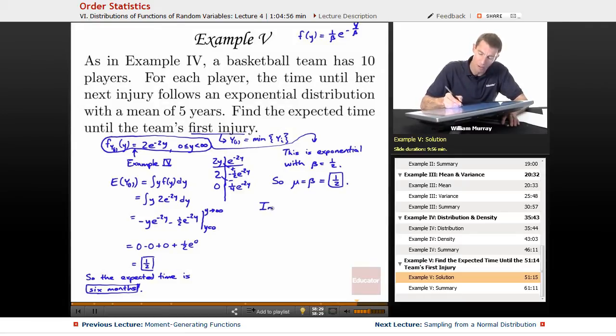So mu equals beta is one half, and that's really all we needed to do if we had noticed that. We could have saved ourselves from walking through that long integration by parts. It's really useful to recognize a distribution if it does fall into one of your known families and to be able to draw some conclusions about it right away. Let me generalize this a little bit. Let me mention where that two came from. If you look back at example four, where that two came from was it just came from the 10 divided by the five. 10 was the number of players on the team and five was the mean of the original distribution.